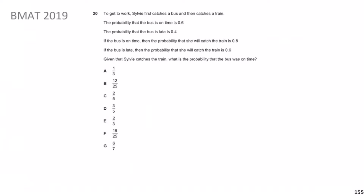Let's go to the first question, BMAT 2019. To get to work, Sylvie first catches the bus and then catches the train. The probability the bus is on time is 0.6, the probability it's late is 0.4. If the bus is on time, the probability she'll catch the train is 0.8; if the bus is late, the probability she'll catch the train is 0.6.